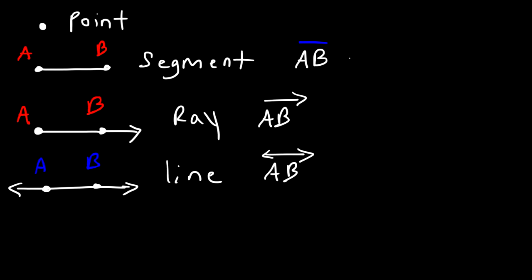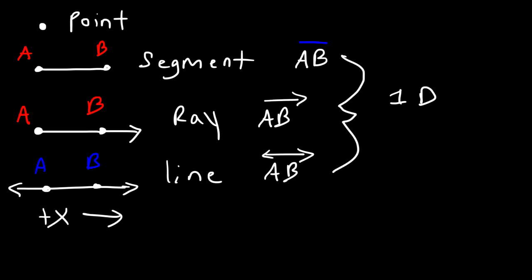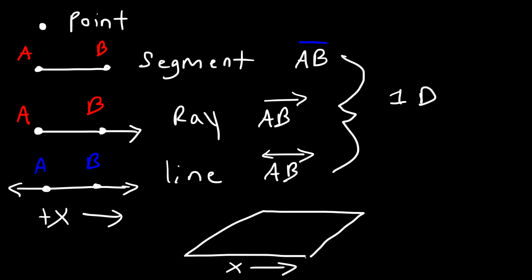Segments, rays, and lines are one-dimensional. For a horizontal line, you can travel to the right or to the left — only in the x direction. A plane is two-dimensional: you can travel in the x direction or the y direction. A plane is flat as a pancake, and like a line, it extends infinitely in the x and y directions.